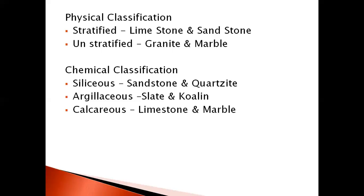The third classification is chemical classification. In this we have three types: siliceous rock, argillaceous rock, and calcareous rock. Rocks that have a high silica (SiO₂) content are known as siliceous rocks — examples are sandstone and quartzite. Rocks that have a high amount of alumina are known as argillaceous rocks — examples are slate and laterite.